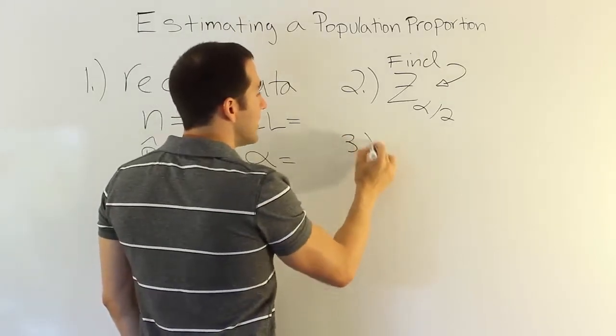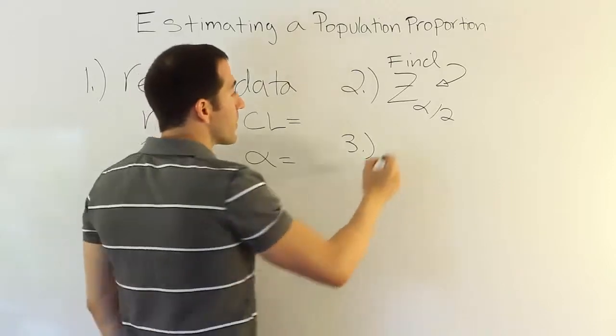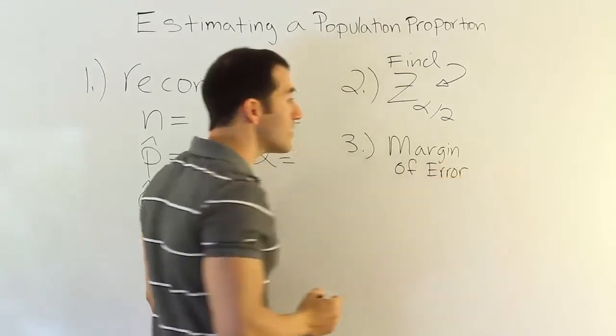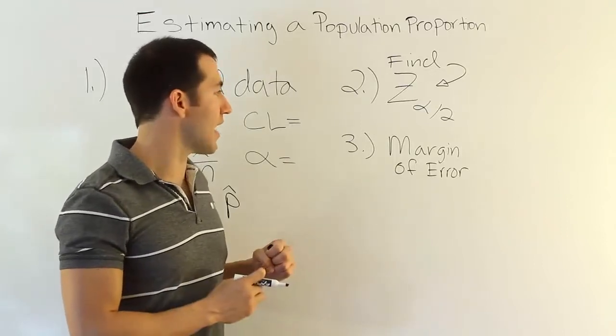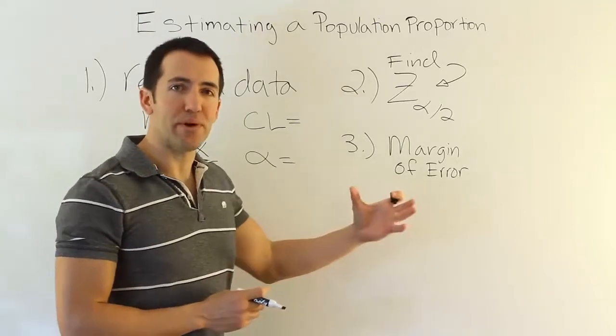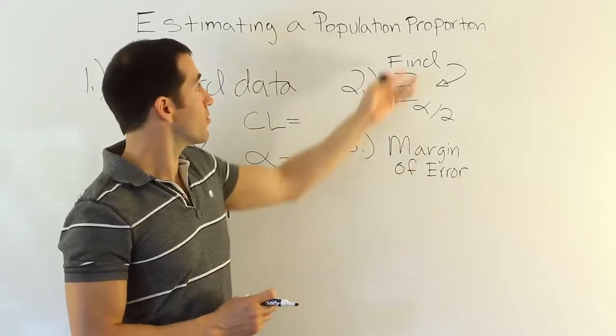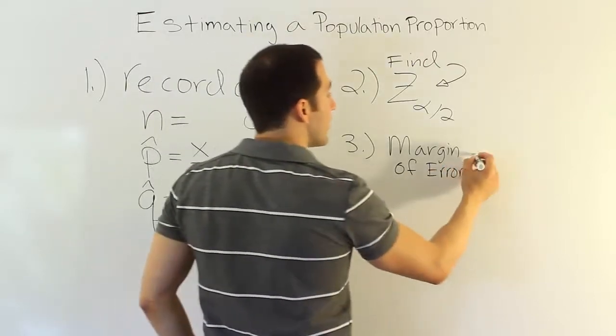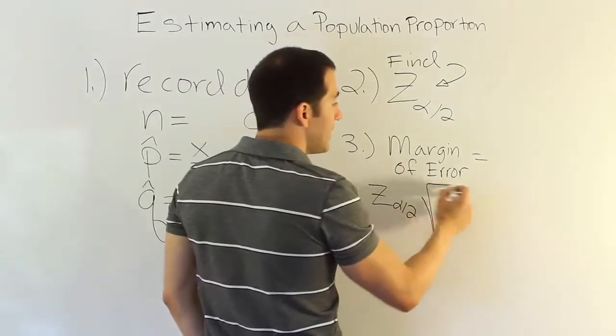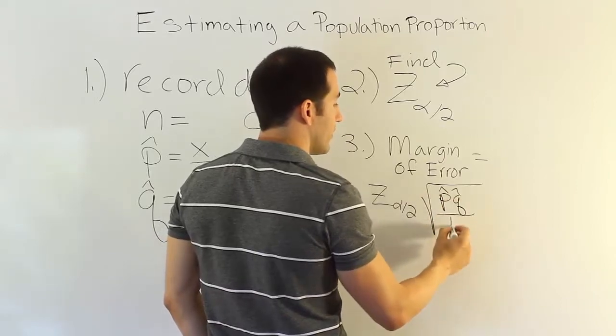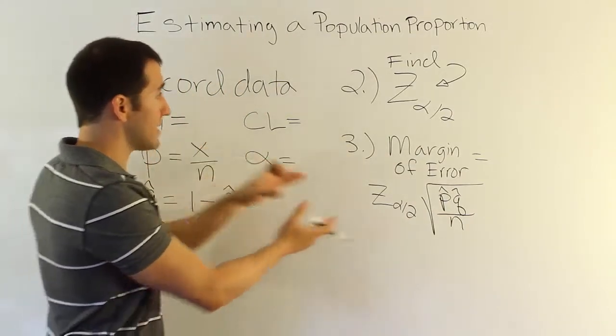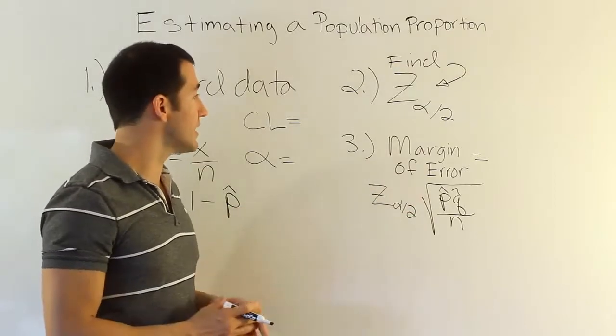And the third step in the process is going to be to determine the margin of error. This is the value that you hear often about when you're listening to CNN and they say they did a poll and they found out that 55% of the population claims they're going to vote for the president again with a margin of error of five points. When they say that margin of error of five points, it's exactly what they're talking about, those problems where they're talking about a proportion or a rate. So the formula for this margin of error is going to be z alpha divided by 2 times the standard error for p-hat. That's going to be p-hat times q-hat over n. p-hat times q-hat over n. That's your margin of error formula. Of course, you would have all these items already at that point. So it's just plugging numbers into a formula. Very easy to do.